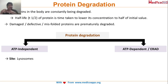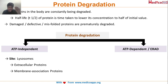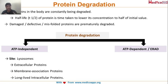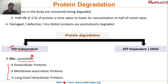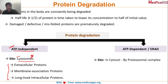The ATP-independent mechanism occurs in lysosomes and is largely for extracellular proteins, membrane-associated proteins, and long-lived intracellular proteins. These proteins need to remain in the cytoplasm for a longer time and are degraded in lysosomes via the ATP-independent pathway. Remember: ATP-independent degradation in lysosomes handles extracellular proteins, membrane-associated proteins, and long-lived intracellular proteins.